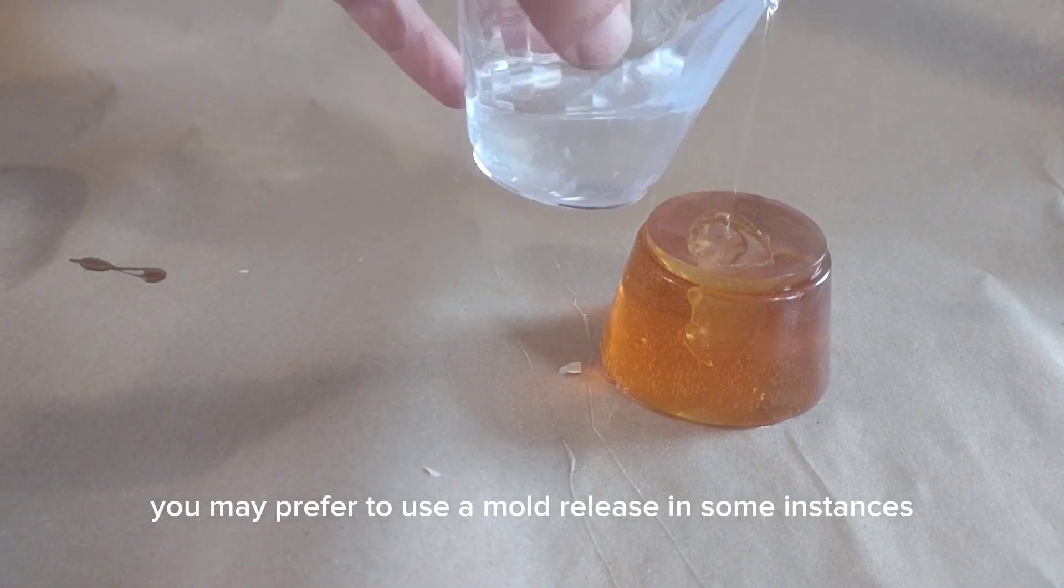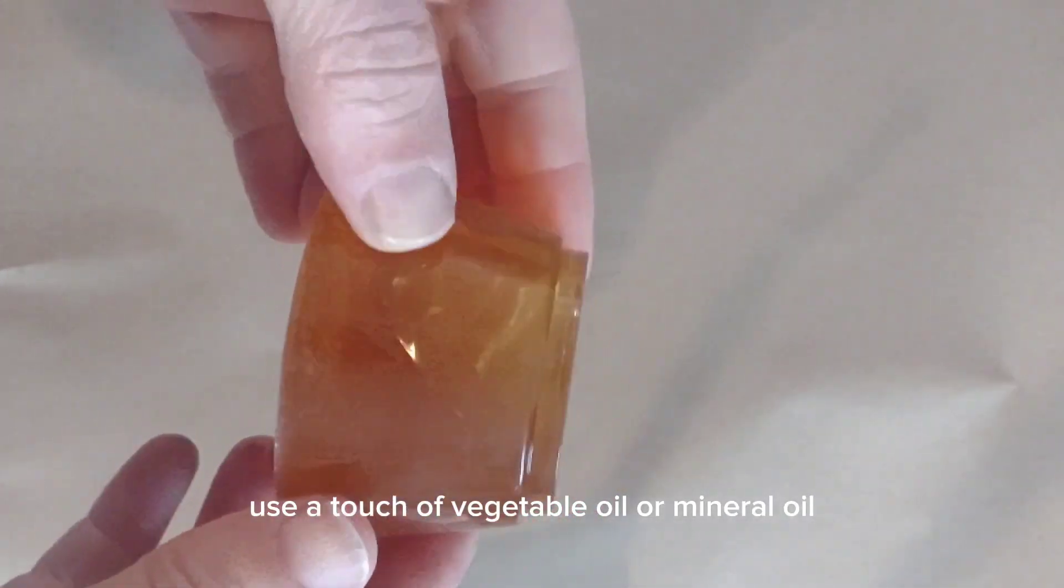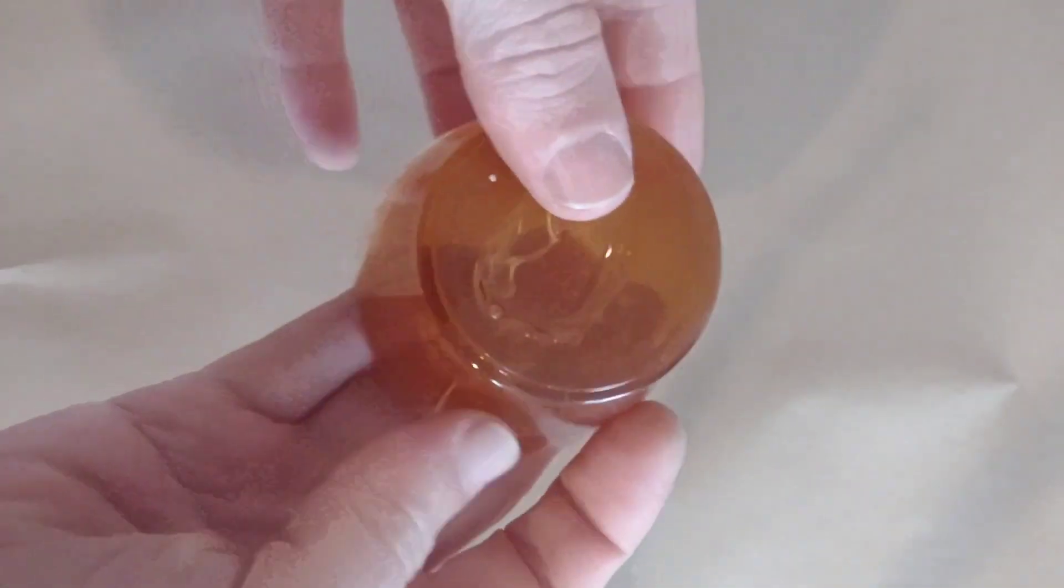You may prefer to use a mold release in some instances. So for the epoxy resin, use a touch of vegetable oil or mineral oil as that mold release.